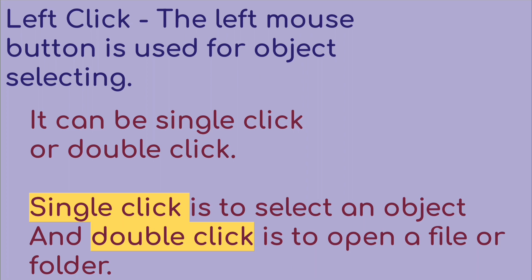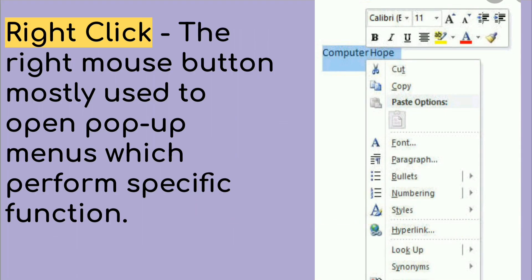Single click is used to select an object. For example, we are using a pencil tool — if you just single click the pencil tool, it selects it. Left click single click selects an object. Double click is used to open a file or folder. We press the left click button two times to open it. So, single click to select an object, double click to open a file.